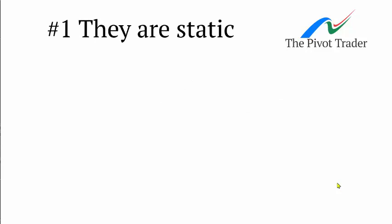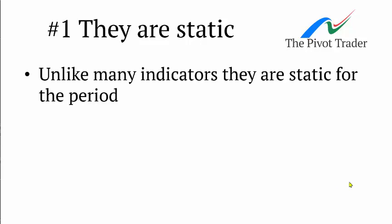So number one: the fact that they are static — they don't move. A lot of period indicators move throughout the periods, such as a moving average. They're moving all of the time. It might appear on a moving average, for example, that price hit the moving average when you look back a week or so later, or a day later, or even a few hours later — oh look, it just ran into that — and you think the moving average is brilliant.